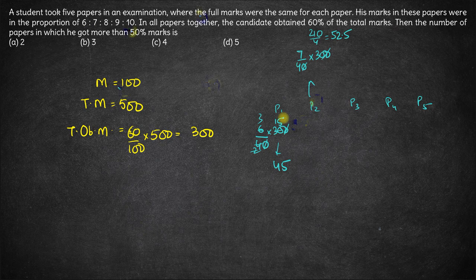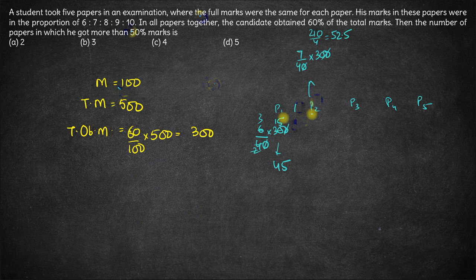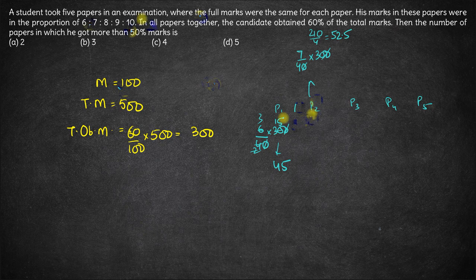In P2 itself the student got more than 50%. And obviously in P3, P4 and P5 he gets more marks than P2. So here definitely he would have got more than 50 in each of these 3 subjects. There is no need to actually calculate.